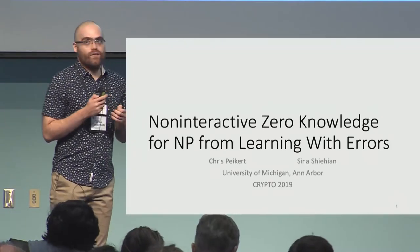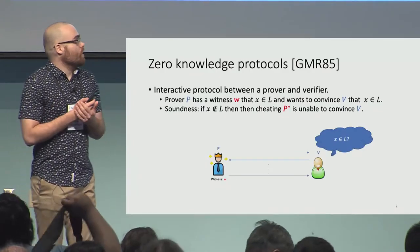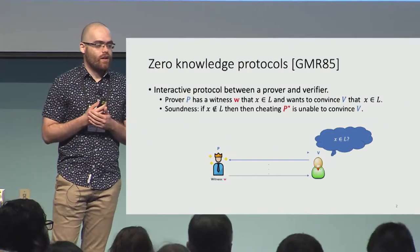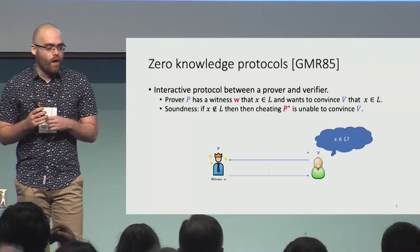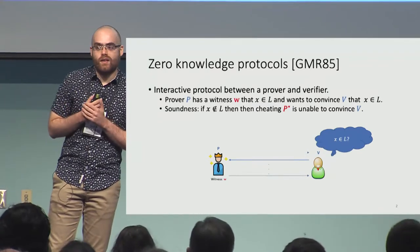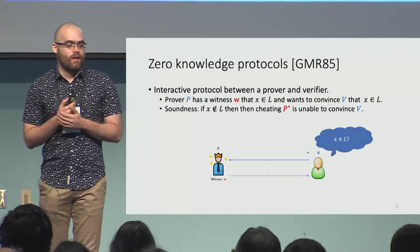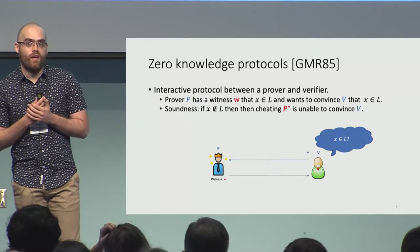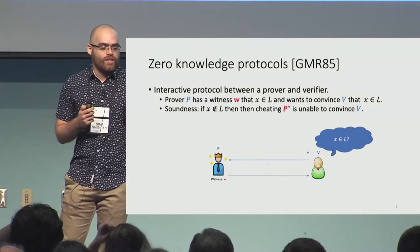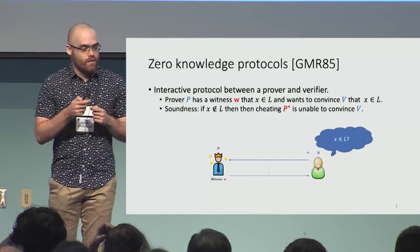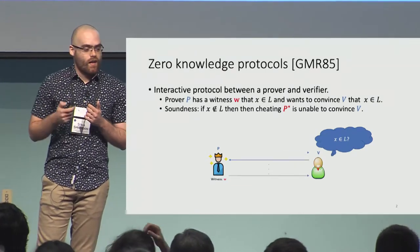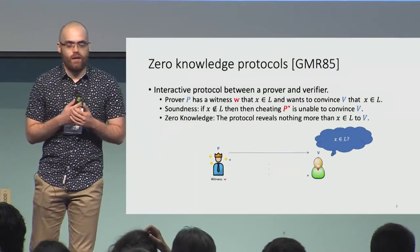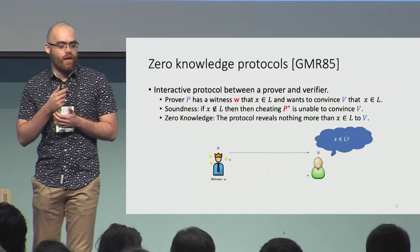We start the talk with reviewing the definition of zero knowledge protocols. In 1985, Goldwasser, Micali, and Rackoff introduced zero knowledge protocols. These are interactive protocols between a prover and a verifier. The goal is that the prover wants to convince the verifier that a certain string X is in a certain language L. These protocols need two properties: soundness, which means a cheating prover cannot fool the verifier if X is not in L, and zero knowledge, which says the verifier learns nothing beyond the fact that X is in L.